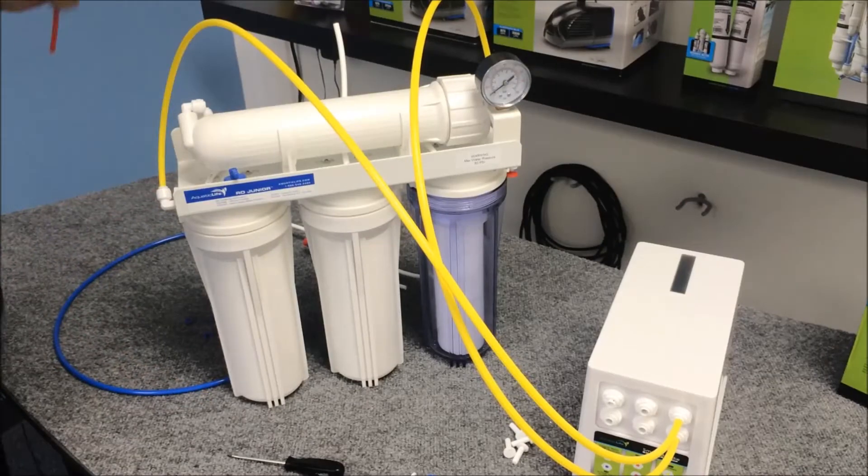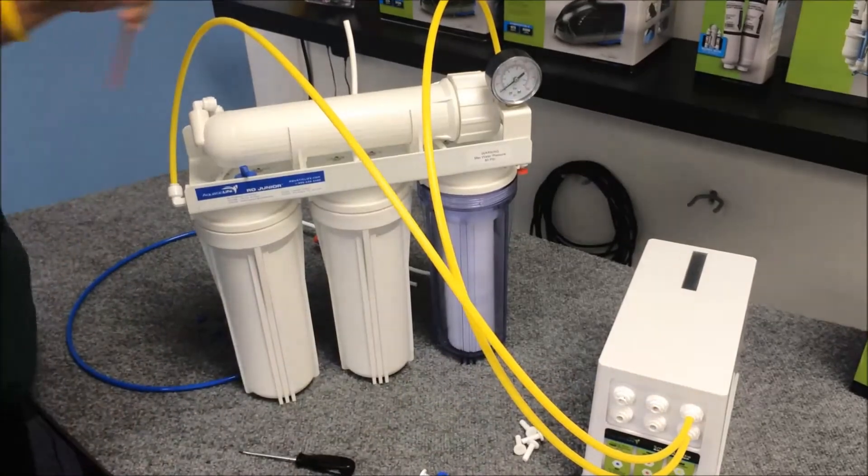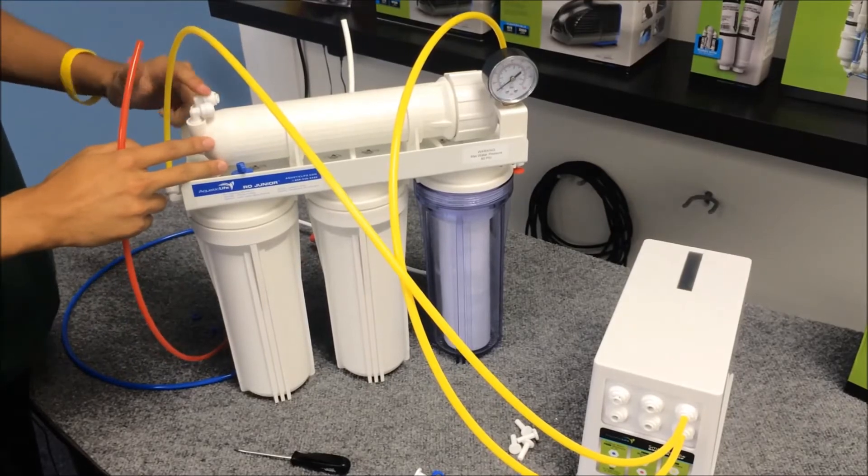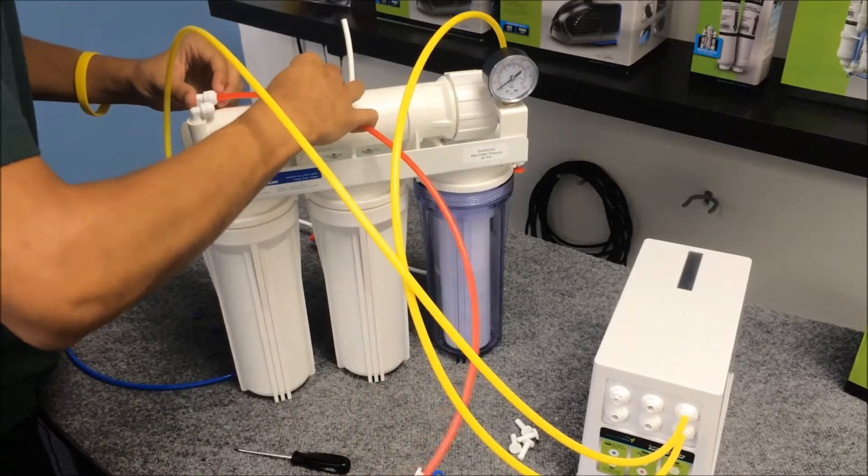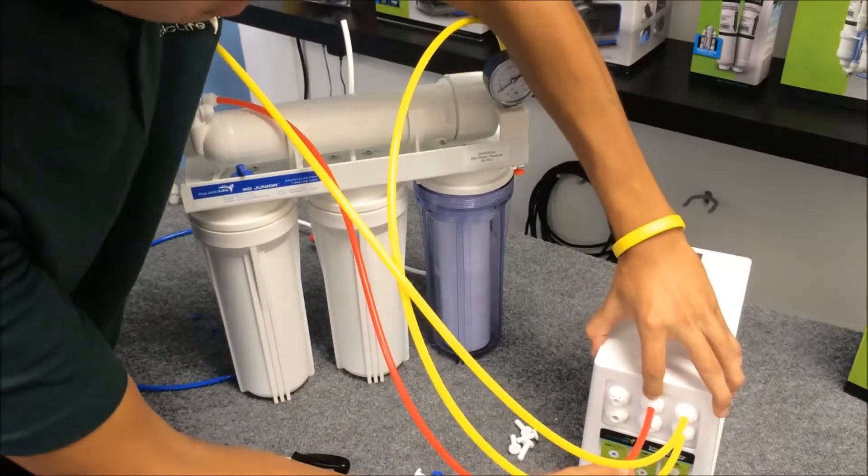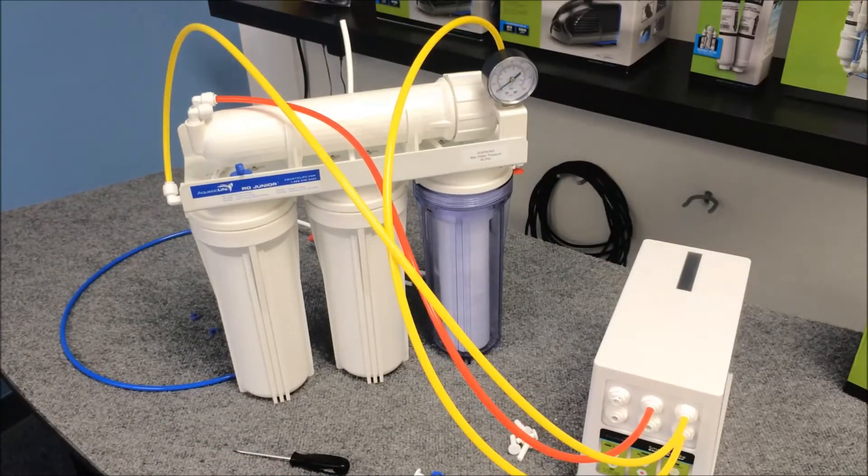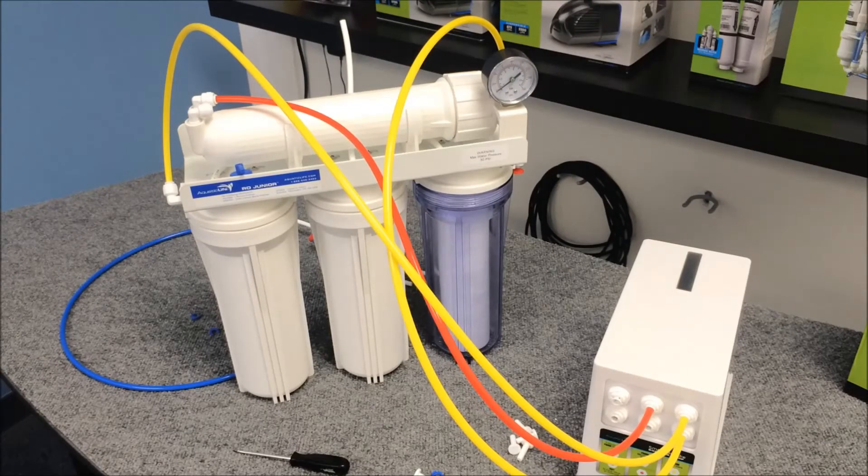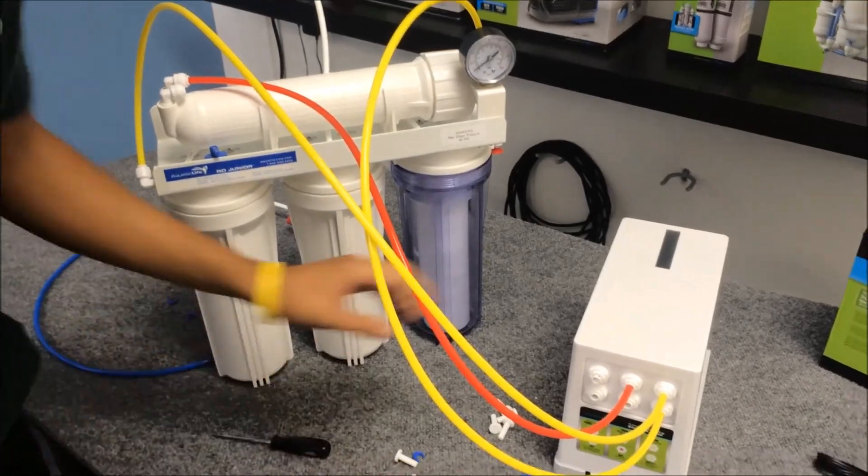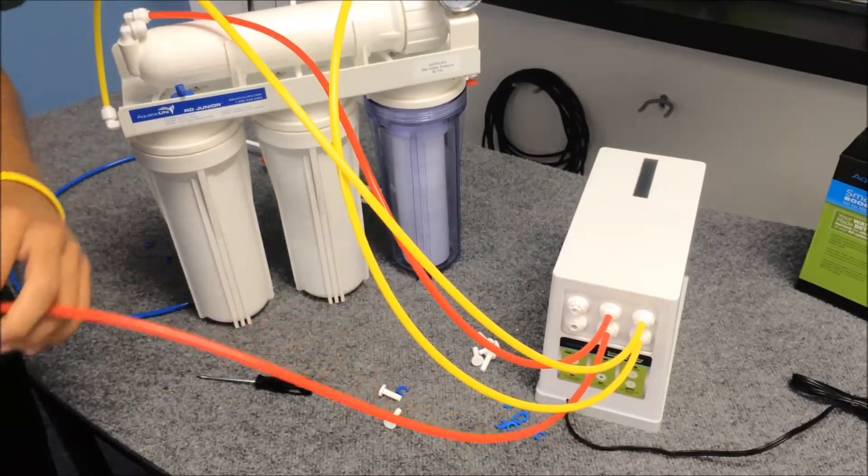We're going to go from our wastewater into the top center. The wastewater, just as a refresher, is the one on the left. Into the top center. Now we're going to take our waistline, the waistline. It's going to go to the bottom. And this can go into a collection tank where you can water your plants or whatever you might do with it.